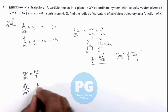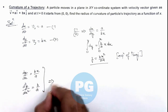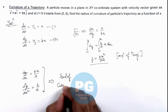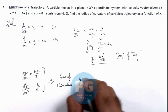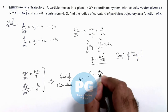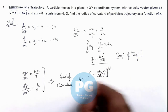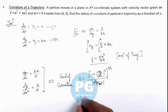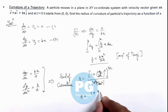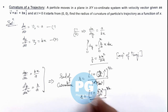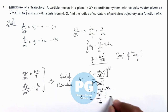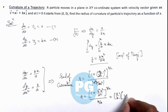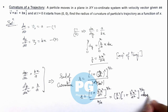The radius of curvature can be given as: [1 + (dy/dx)²]^(3/2) divided by |d²y/dx²|. Substituting the values, the radius of curvature is [1 + b²x²/(a²y²)]^(3/2) divided by b/ay. This simplifies to (ay/b) multiplied by [1 + b²x²/(a²y²)]^(3/2), which is the final result of this problem.